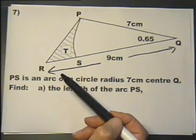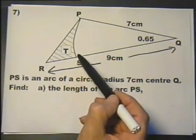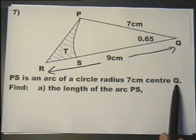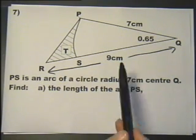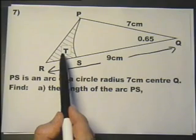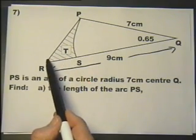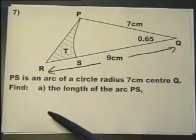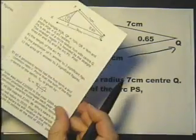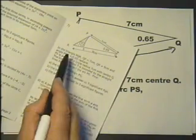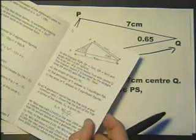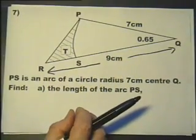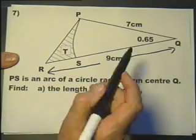It goes on to say PS is an arc of a circle of radius 7 centimeters, and the center is Q. The shaded region T is bounded by the straight lines RP, RS, and the arc. Let's make a start on part A: find the length of PS.